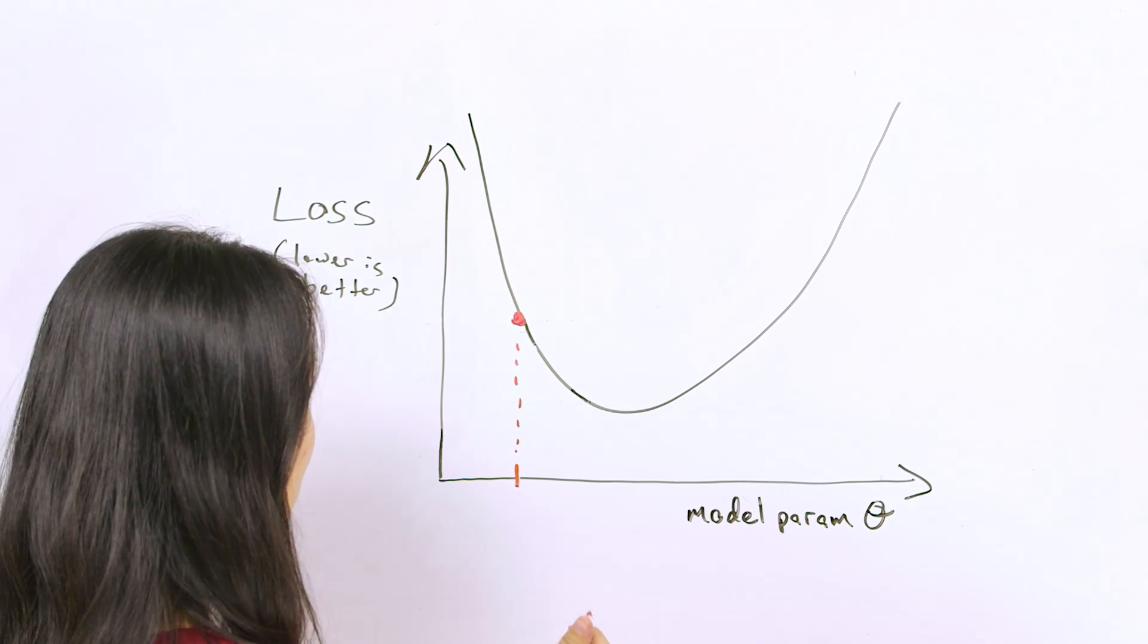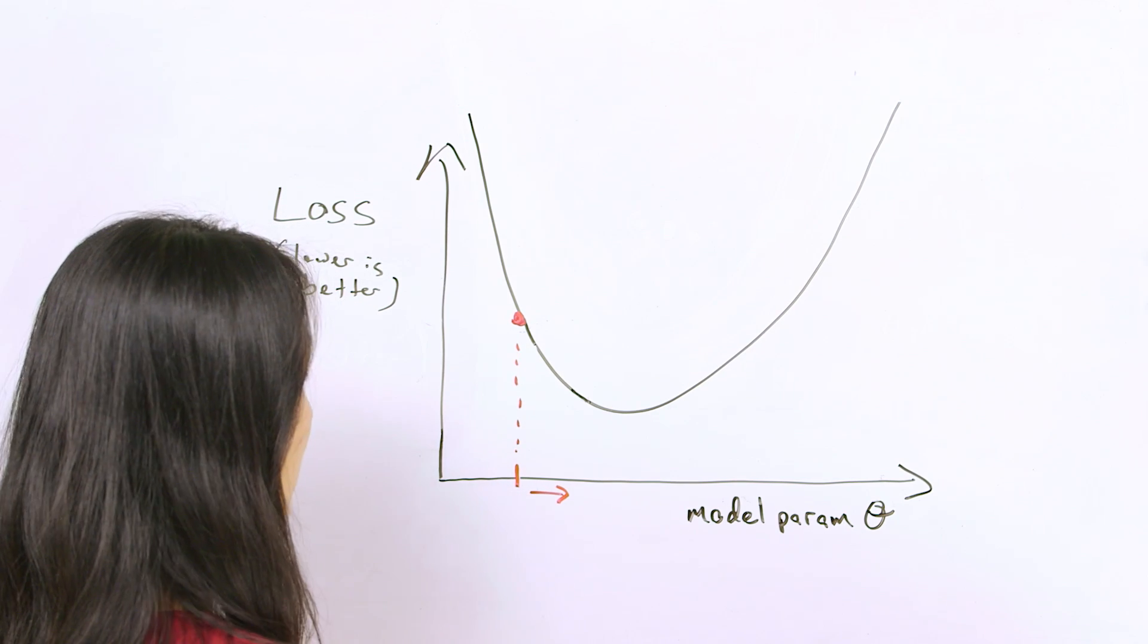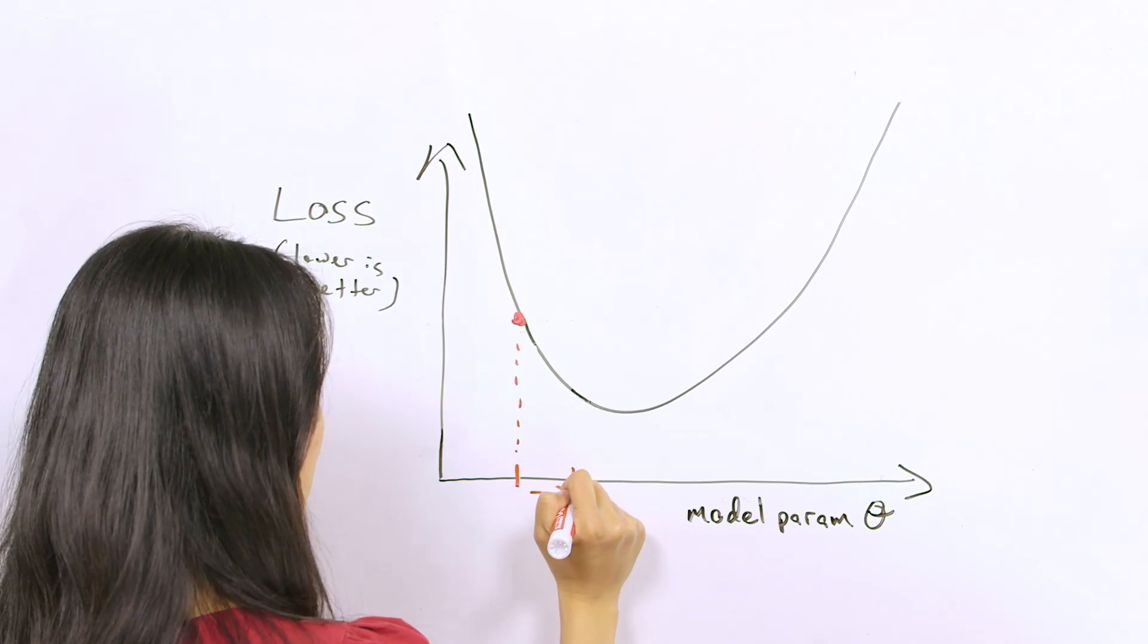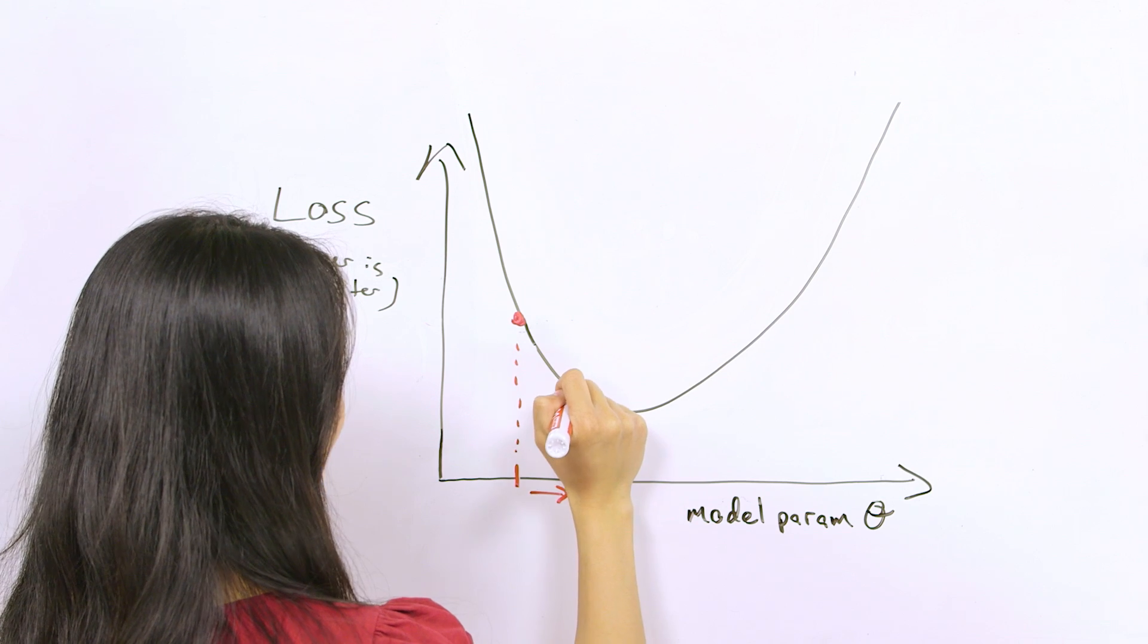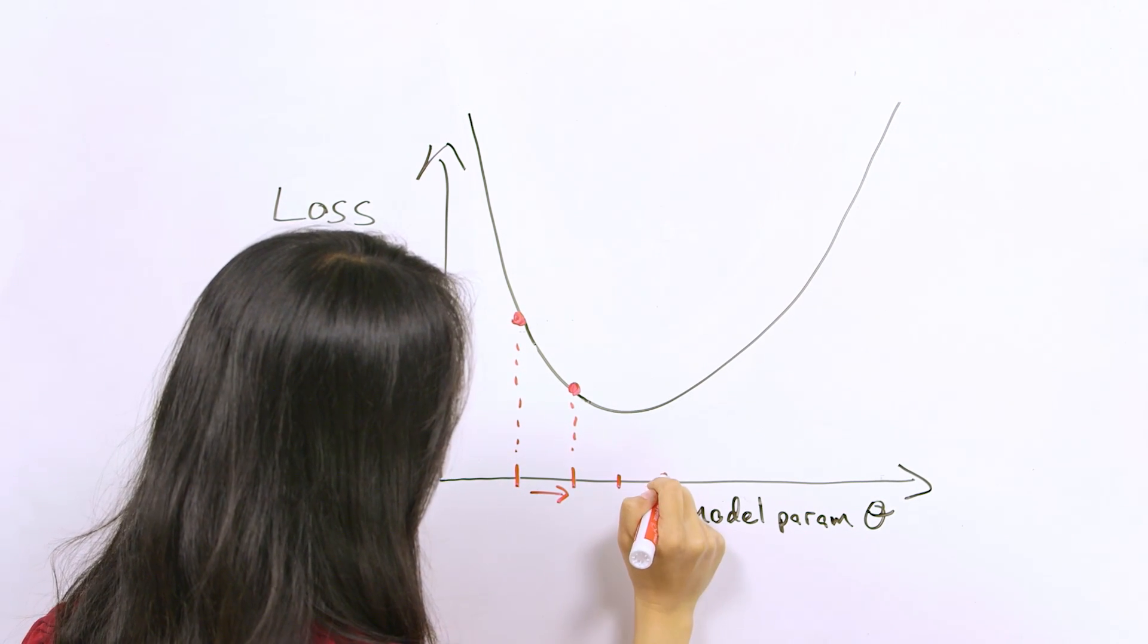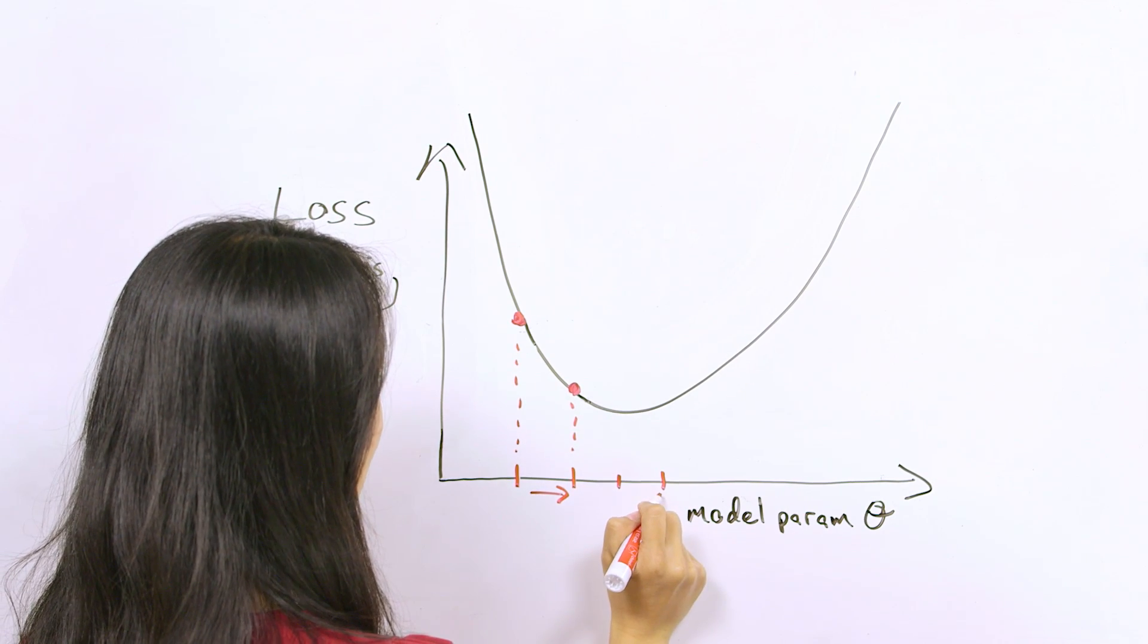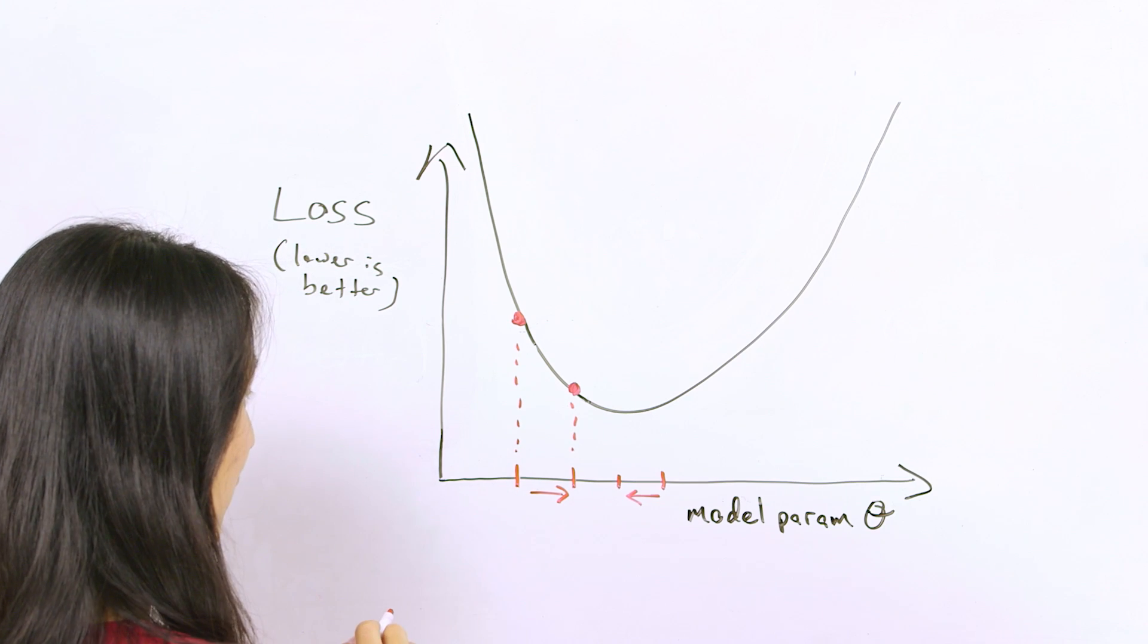We can then compute the negative gradient, which tells us in which direction we should go in order to minimize the loss. If we take a gradient step in that direction, we get a new loss. We can keep taking gradient steps in that direction until we reach a point in which we have passed the local minimum, in which the negative gradient will tell us to go back in the direction that we came from.